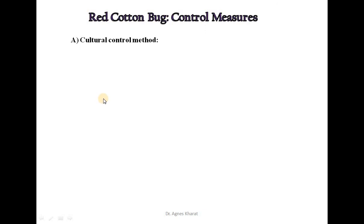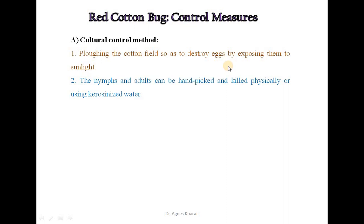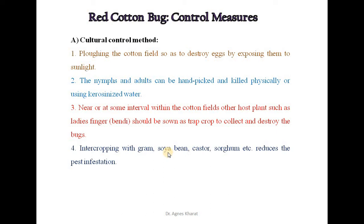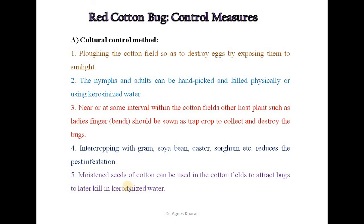Cultural control measures include: plowing the cotton field to destroy eggs by exposing them to sunlight; nymphs and adults can be hand-picked and killed using kerosene water; within cotton fields, other host plants such as lady's finger should be sown as trap crops to collect and destroy the bugs; intercropping with gram, soybeans, castor, sorghum etc. reduces pest infestation; and moistened cotton seeds can be used in the field to attract bugs for later killing in kerosene water.